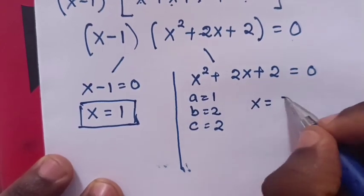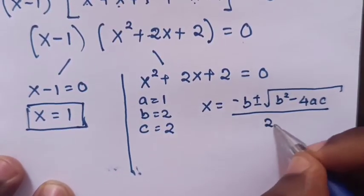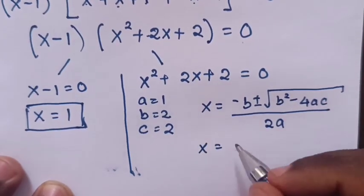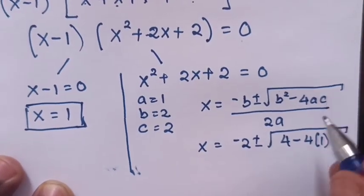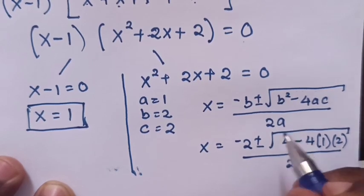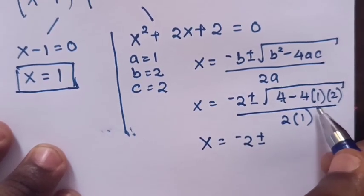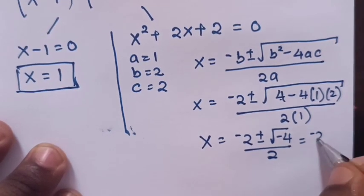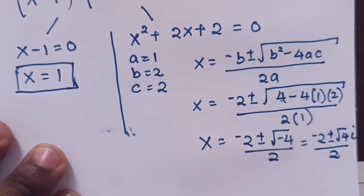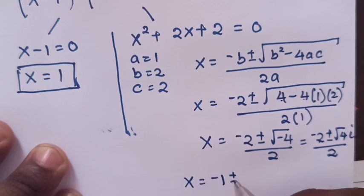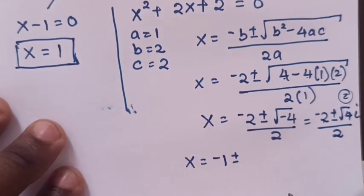To find the value of x using the quadratic formula: x equals negative b plus or minus square root of b squared minus 4ac over 2a. So x equals negative 2 plus or minus square root of 4 minus 8, over 2, which gives negative 4 under the root. This becomes negative 2 plus or minus square root of negative 4 over 2, which is negative 2 plus or minus 2i over 2. Dividing by 2, it will be negative 1 plus or minus i.